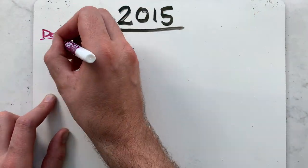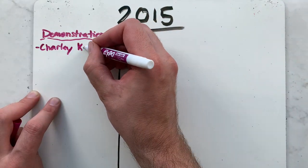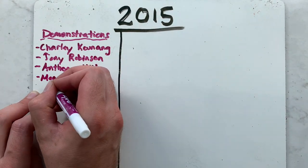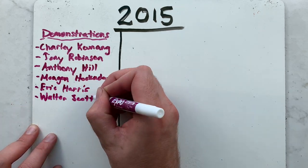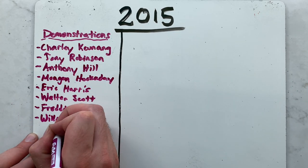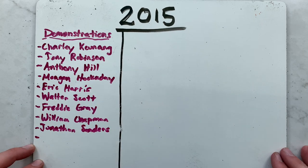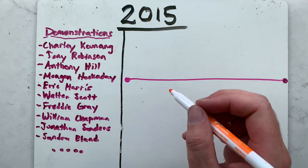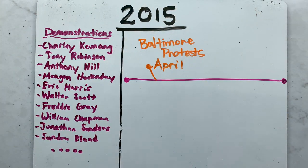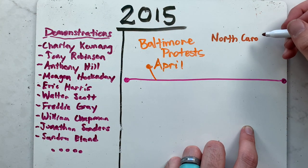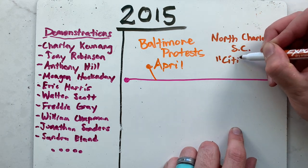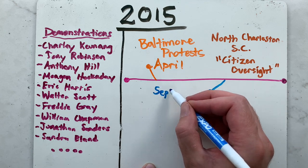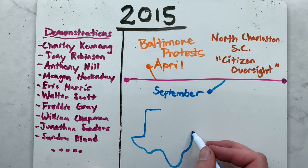In 2015, Black Lives Matter demonstrated against the deaths of additional African Americans by police actions. These include Charlie Kuning, Tony Robinson, Anthony Hill, Megan Hockaday, Eric Harris, Walter Scott, Freddie Gray, William Chapman, Jonathan Sanders, and Sandra Bland, among others. In April, supporters of the BLM movement protested around the United States and in Baltimore over the death of Freddie Gray. Also, there were protests for Walter Scott's death in North Charleston calling for citizen oversight of police.